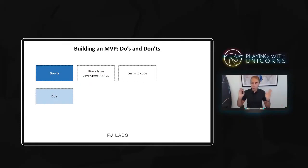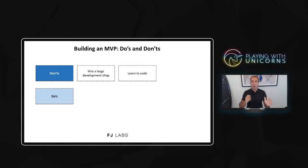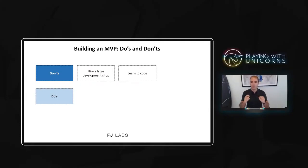Number two: don't learn to code. You can go take classes and after eight weeks be somewhat proficient in Python or PHP or whatever, but frankly there's a lot of talent out there and a lot of alternatives, and it's probably not the best use of your time. You are, after all, the visionary — the one designing the product and figuring out how to make it work. You should not be building your own MVP, at least through traditional coding.